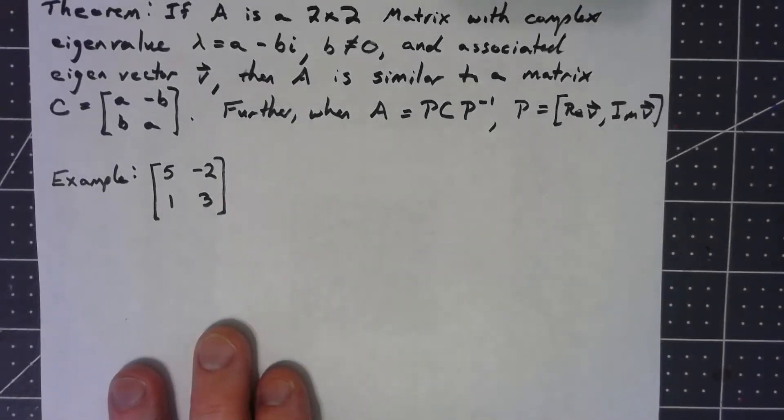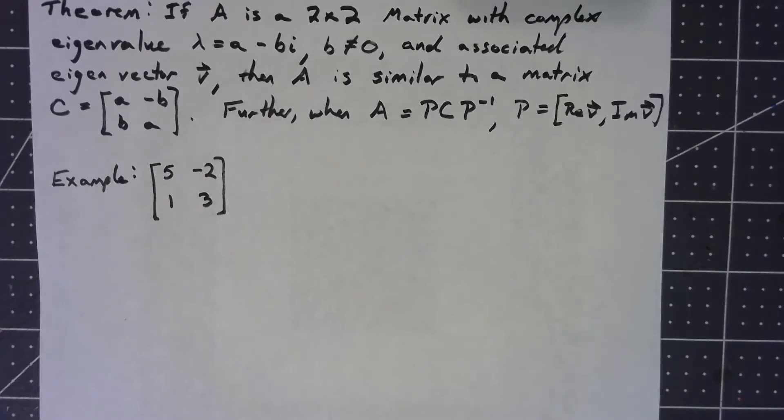Let's take a look at a theorem involving 2×2 matrices and complex eigenvalues and eigenvectors. So if we've got a 2×2 matrix and it's got a complex eigenvalue a minus bi, and since this is a complex number, b can't be zero.